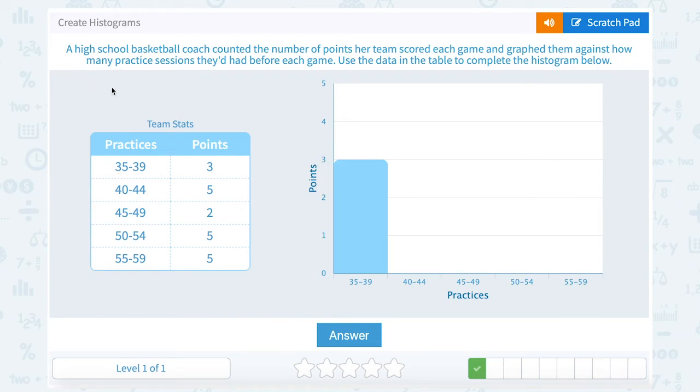And let's read our question here. A high school basketball coach counted the number of points her team scored each game and graphed them against how many practice sessions they'd had before each game. So when they had 40 to 44 practice sessions they scored five points. Okay, so on 40 to 44 I'm going to draw that all the way up to five.